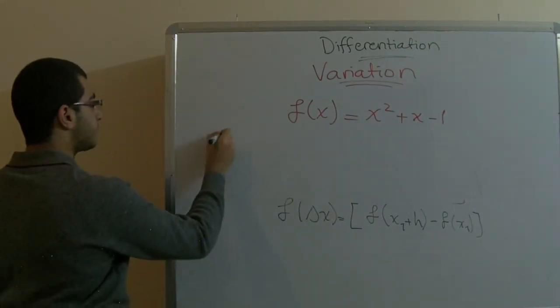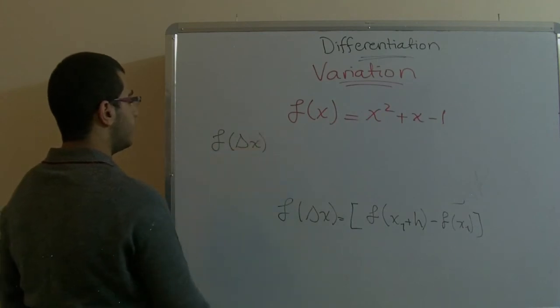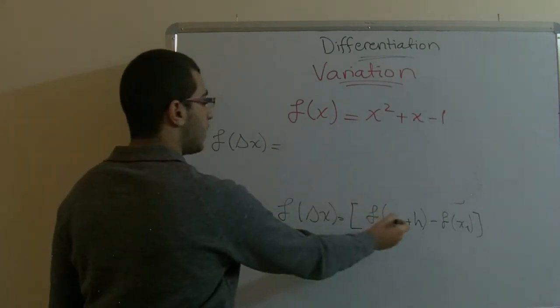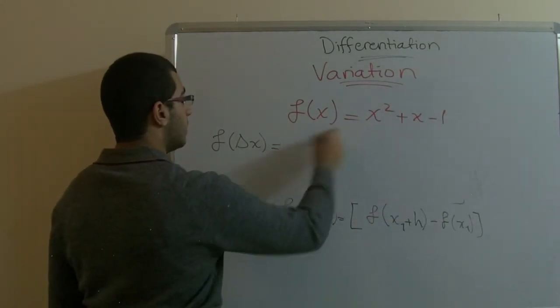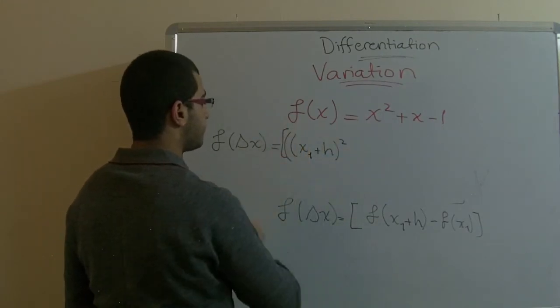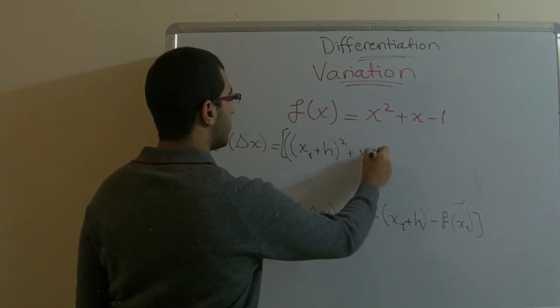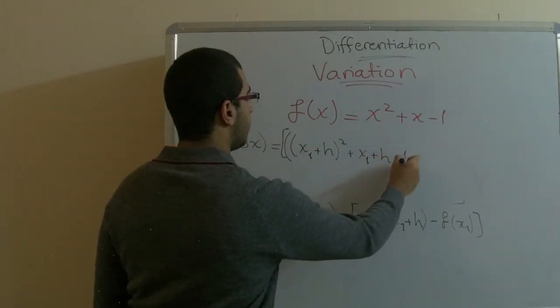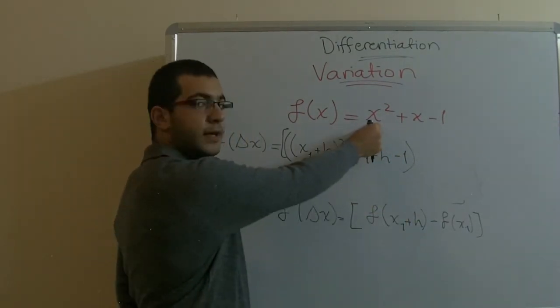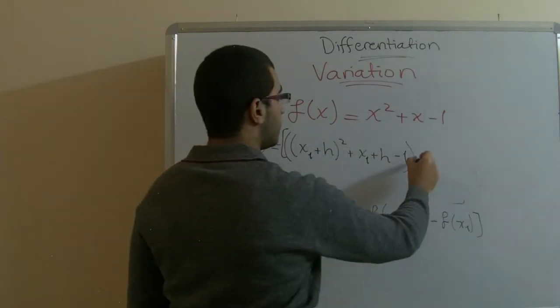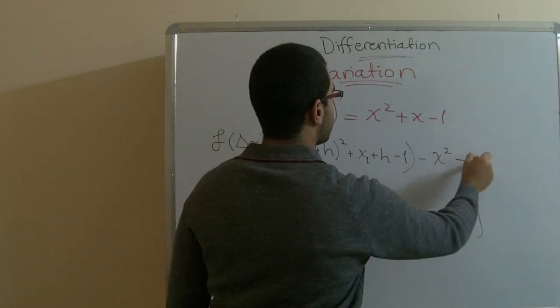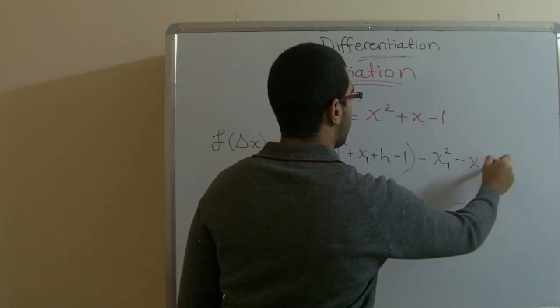We have f delta x equals, here we have x1 plus h, x1 plus h, all to power of 2, plus x1 plus h negative 1. This is the function where we substitute x1 plus h instead of x here in our equation. Then we write our next equation like this, introducing the negative inside the inner bracket.